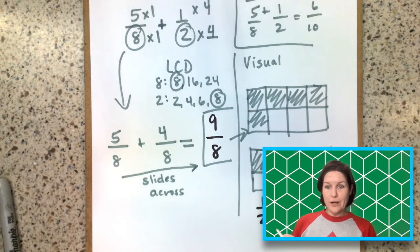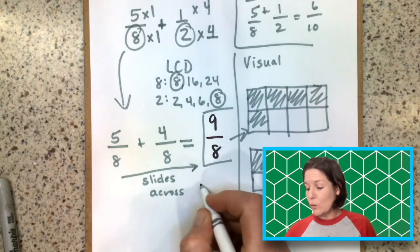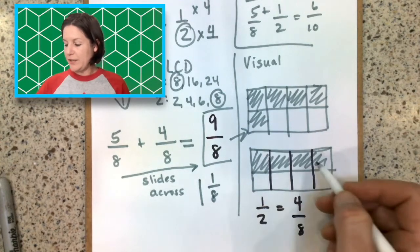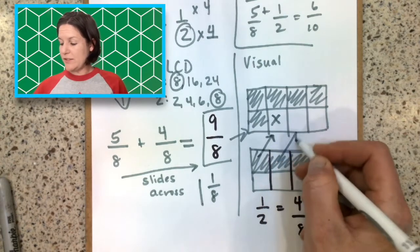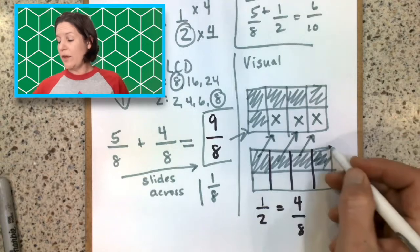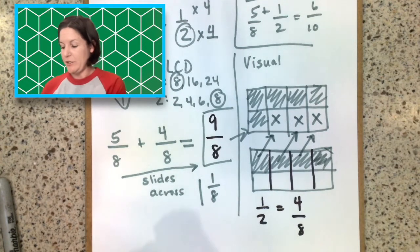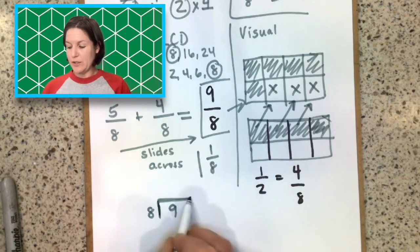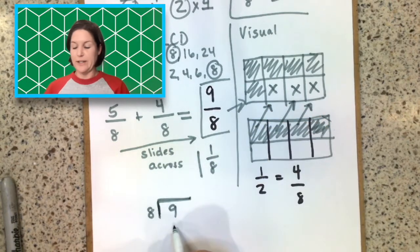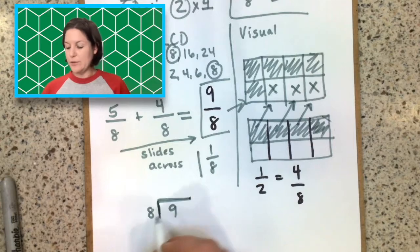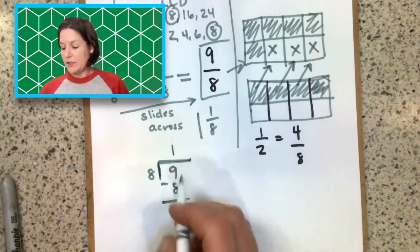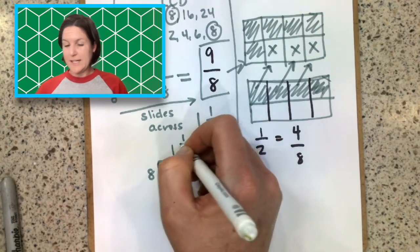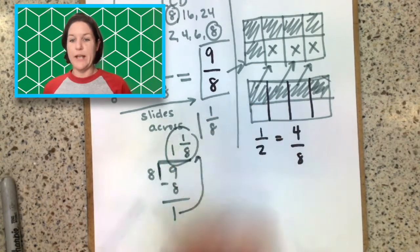Also, let's add one more thing before we go: 9 eighths is the same as 1 whole and 1 eighth. How do I know that? Well, if I move the pieces together, I have one whole with 1 eighth left over. The way that you do that is to take your numerator — this is like saying 9 divided by 8. So 9 divided by 8: 8 goes into 9 one time, we get a remainder of 1. Our denominator was 8, so our answer is 1 and 1 eighth.